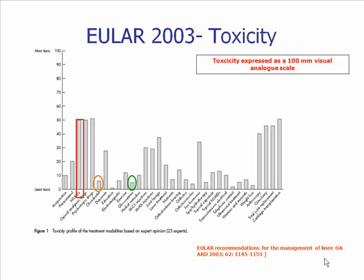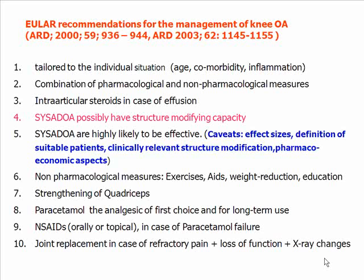Toxicity was evaluated by the panel members according to a VAS, and the red bar indicates the estimated toxicity for NSAIDs in the management of osteoarthritis of the knee joint. We finally ended up in 2003 with the updated EULER recommendations for the management of knee osteoarthritis, highlighting those dealing with possible structure-modifying therapeutic capacity, mostly related to slow-acting symptomatic drugs in osteoarthritis, mentioned within two of those recommendations.